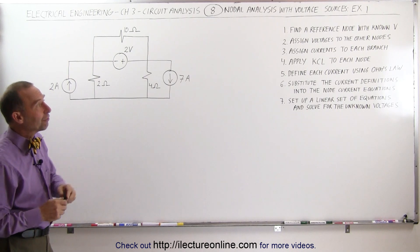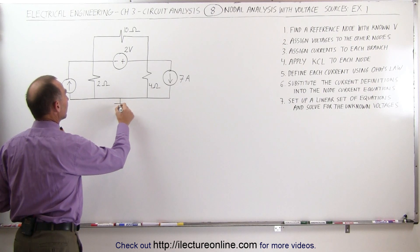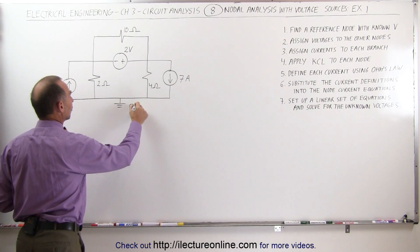First, we're going to find a reference node with known voltage, and why don't we just go ahead and connect this to ground to make this zero volts.